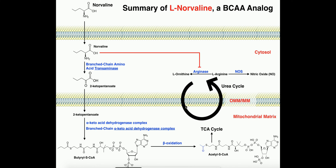Here we have what's called the urea cycle. This process mainly does not happen in skeletal muscle as much — it will actually happen more in the kidneys. Norvaline can be taken up by many different types of cells, including cells that utilize the urea cycle. The urea cycle is a pathway that spans both the cytoplasm and the mitochondrial matrix, where it basically gets rid of excess nitrogen in the form of ammonia, excreted as urea.